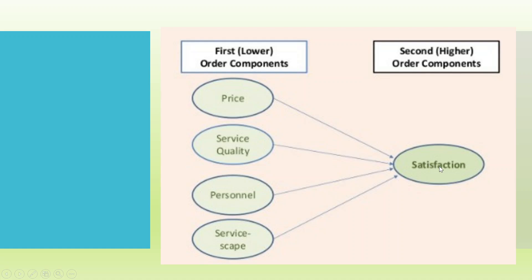So satisfaction becomes a second order model. Price, service quality, personnel and service scope are the first order. This model is also known as a second order model, or a second degree model, or a hierarchical component model.